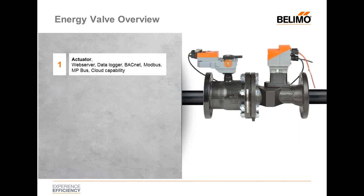Let's break down a little bit of an Energy Valve overview. Here we have item number one, which is the actuator. This actuator is one of the most advanced actuators we have in the platform — it has a lot of capability built into it. Starting off, first is the integrated web server. This allows for a TCP/IP network. There are energy valves located all over the United States and all over the world that I can connect to sitting at my desk in Danbury via this web server. There's also an integrated data logger in the energy valve actuator.